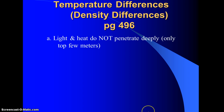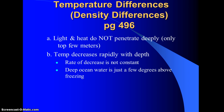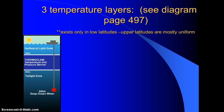In the ocean, light and heat don't penetrate very deeply — only the first few meters, think of that meter stick in class. The temperature drops dramatically with depth, but the rate of decrease is not constant. You have a dramatic drop early on, and then it maintains just a few degrees above freezing throughout the whole depth of the ocean. There are three distinct temperature layers found in the ocean, and they really only exist in the low latitudes. The upper latitudes are actually pretty uniform in temperature.